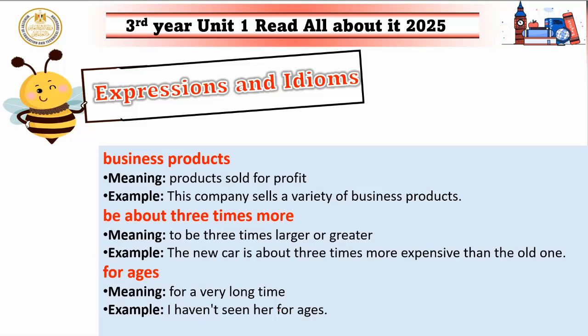Let's continue with more expressions and idioms. 'Business products' — the meaning is products sold for profit. For example: this company sells a variety of business products. Business products are items that people buy from companies.